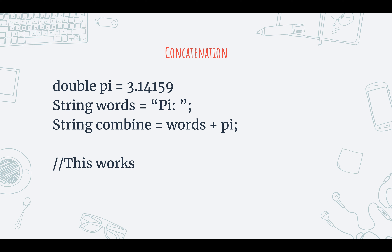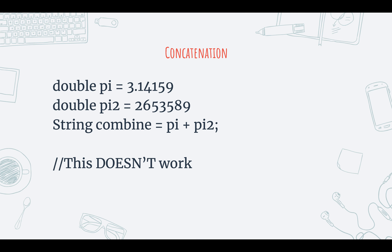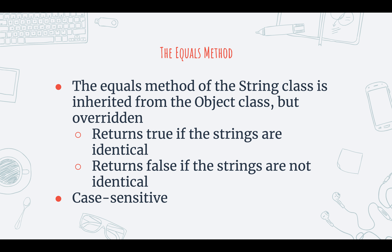Let's look at two examples of concatenation. We have a double pi set equal to 3.14159, and we also have a string variable. Since one of our variables is a string, when we concatenate them together it will work. However, if we have two doubles, neither of which are strings, and we want to concatenate those two things together into a string, it will not work — because none of those variables are a string. So what we would have to do is add an empty string to the statement to make it work.